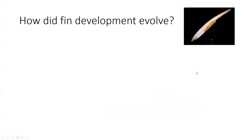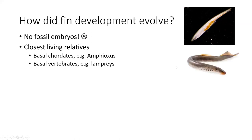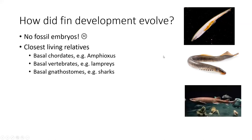How did fin development evolve? Sadly, there are no fossil embryos, so we have to work with the closest living relatives: basal chordates like amphioxus, basal vertebrates like the lamprey — an agnathan, a jawless vertebrate — or basal gnathostomes like sharks or skates, as in the paper just shown. We want to understand how morphology changes during evolution and what the genetic background to those morphological changes might be.